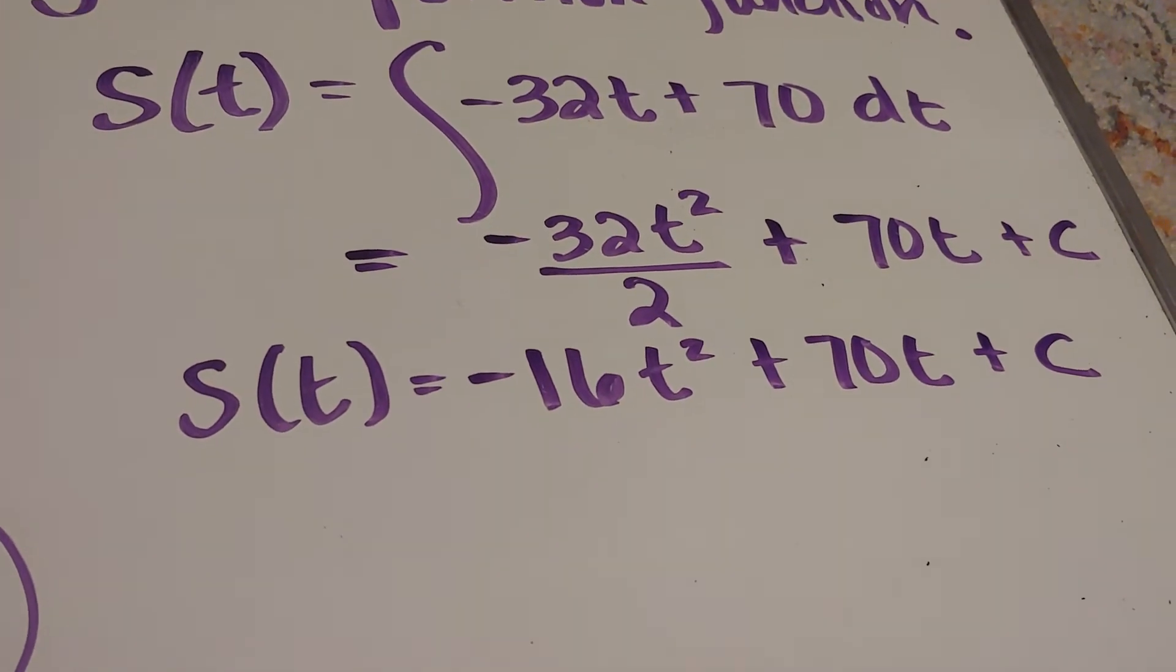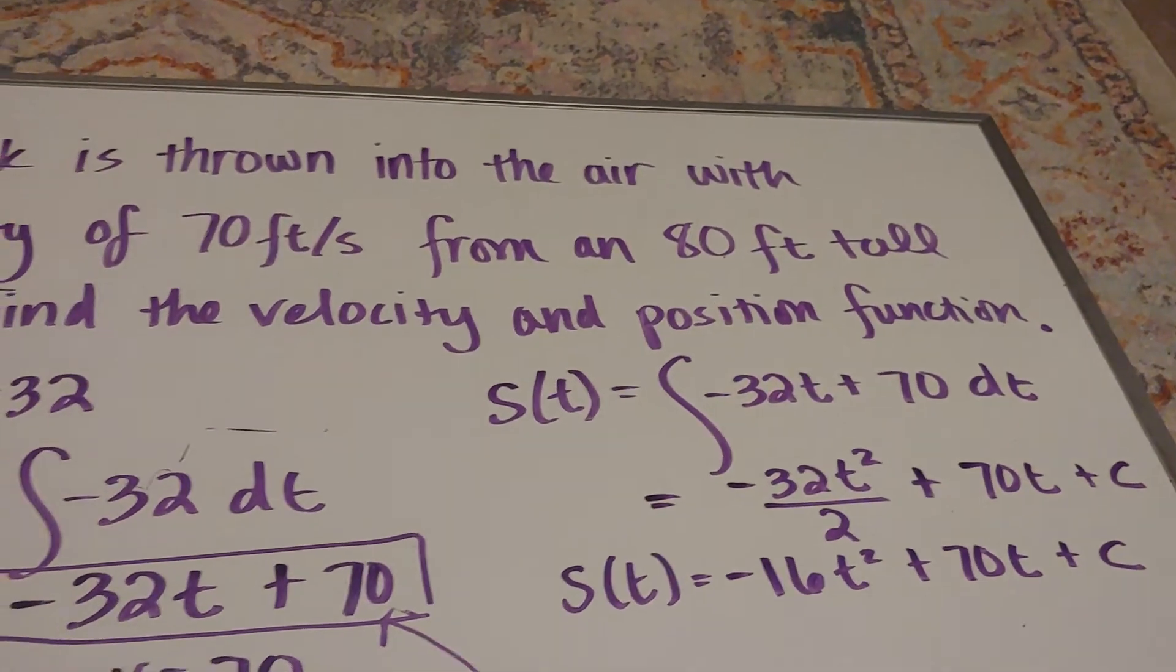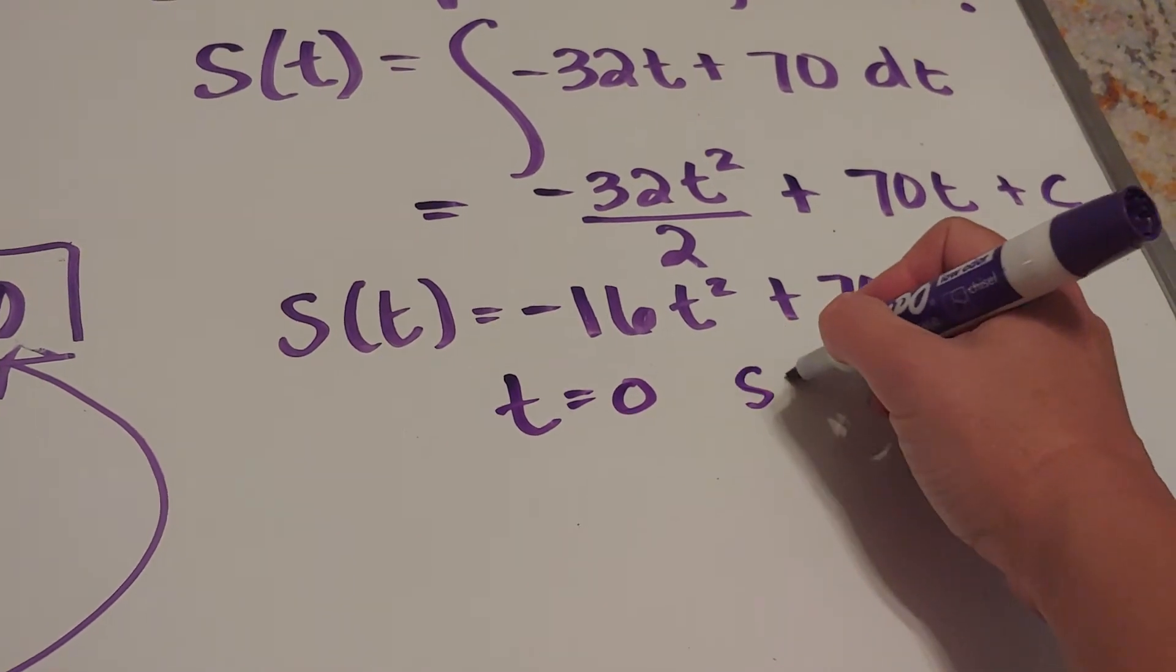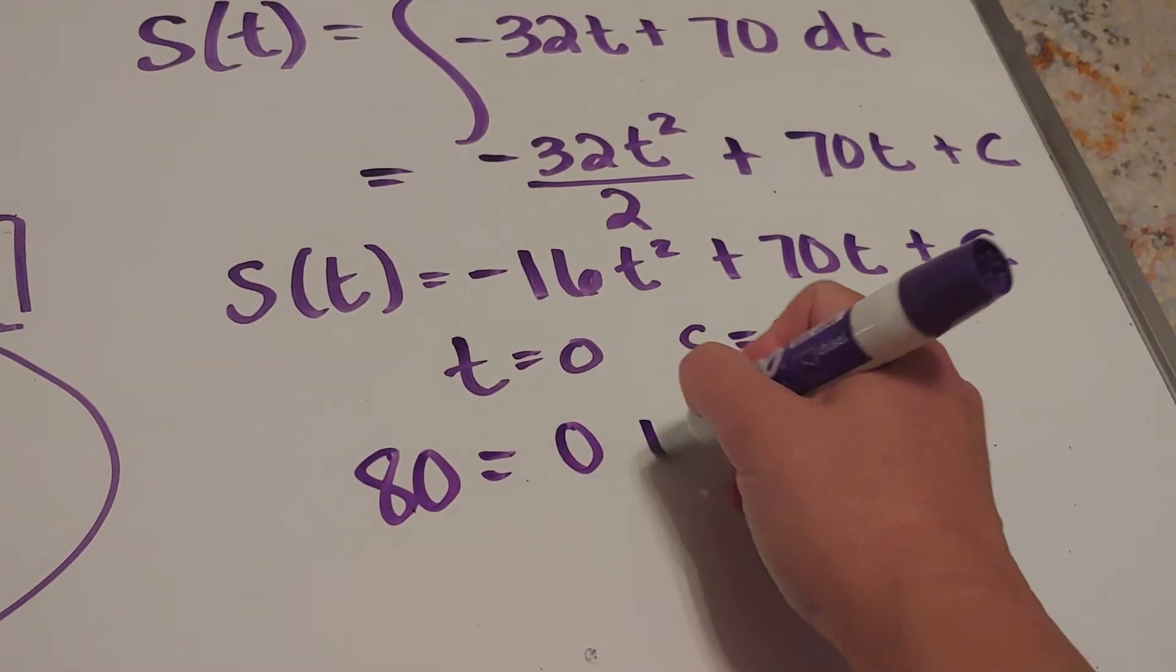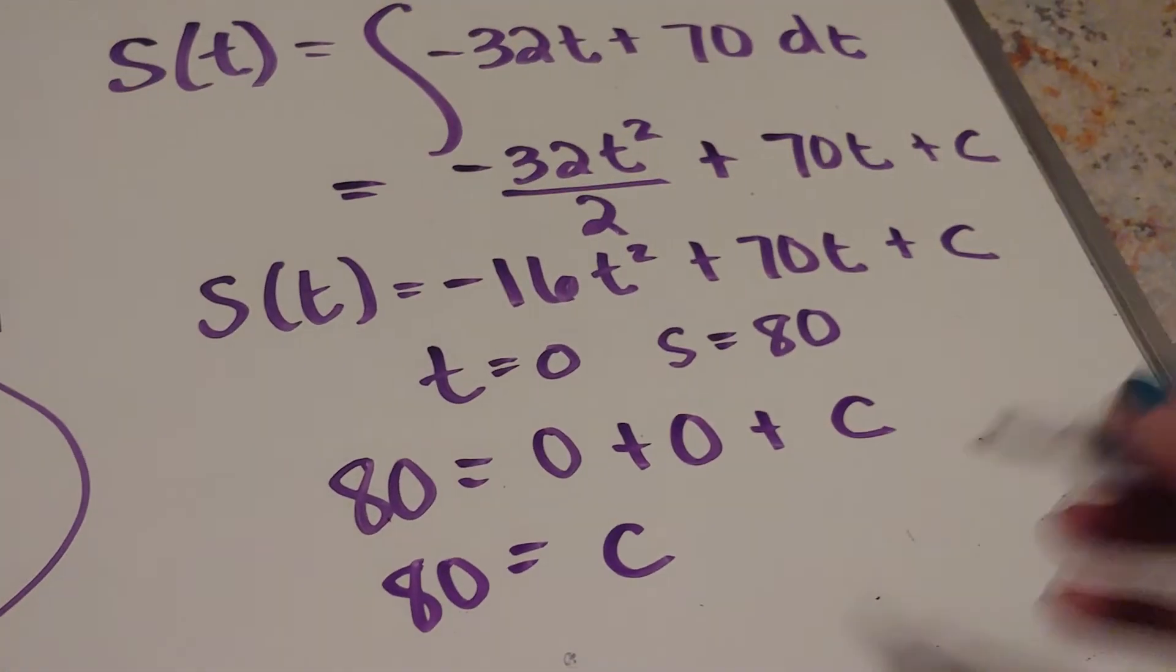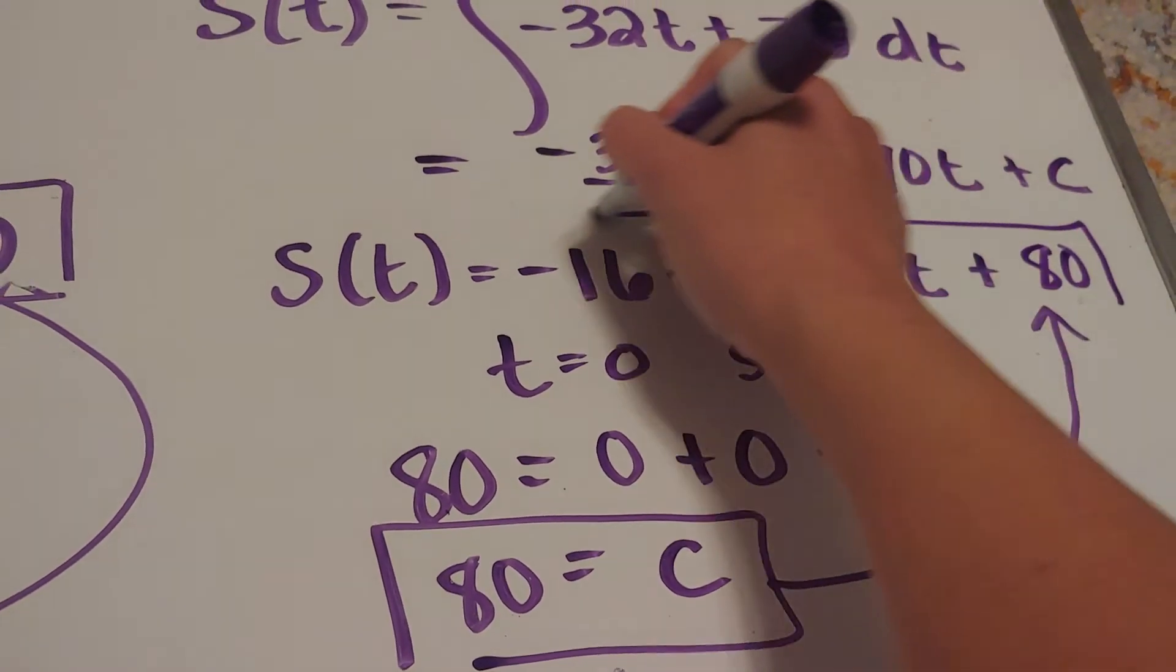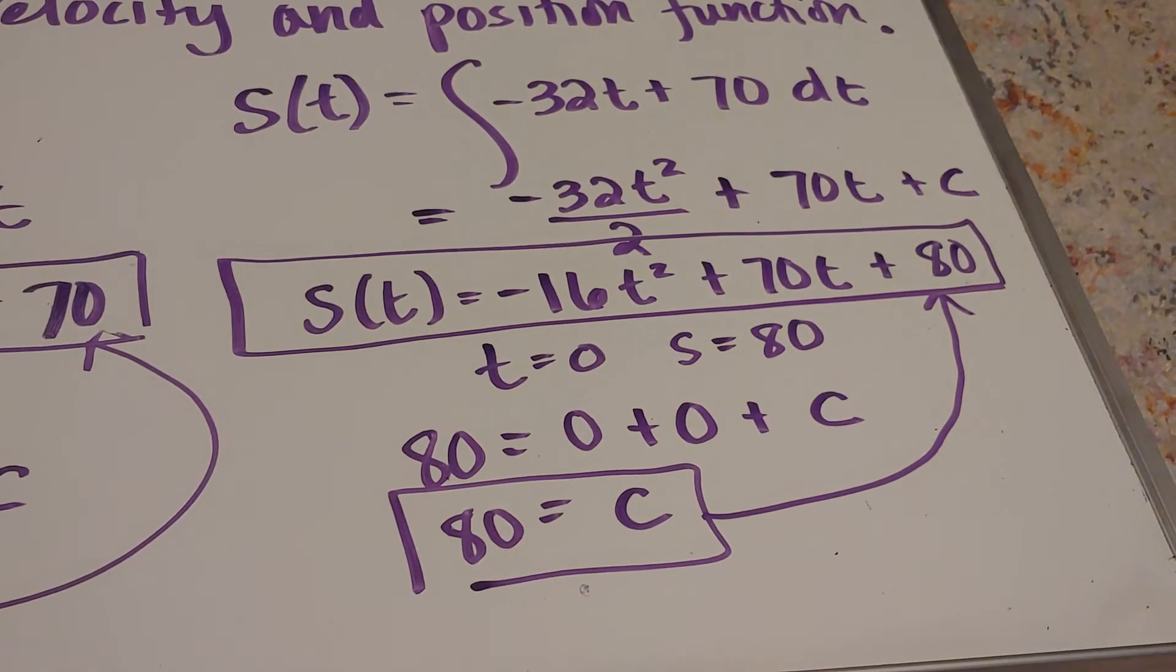Now I was given a fact about this rock. Initially I was standing on top of an 80 foot tall cliff, apparently, throwing this rock. So that means that when t is zero, the position is 80. So I'm going to plug that in. So I get 80 equals zero plus zero plus c, so c will equal 80. So what's my answer? My answer is I'm going to go back up to this position function and I'm going to upgrade it and I'm going to throw the 80 in. There it is, there's my position function for all relevant times t.